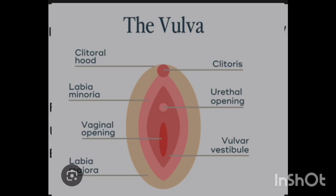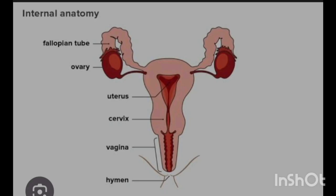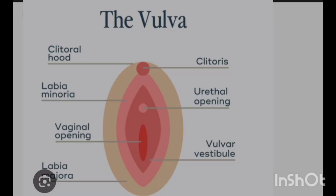These external female genitalia structures are collectively called the vulva. Then after the external genitalia, we have the internal female genitalia, which are located inside the female pelvis. This consists of the vagina, uterus, ovaries (right and left), and the uterine tubes — formerly called fallopian tubes.